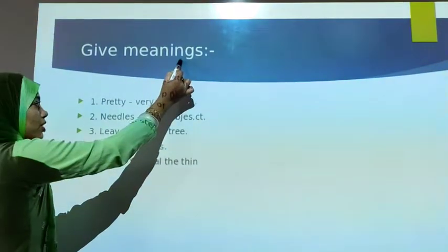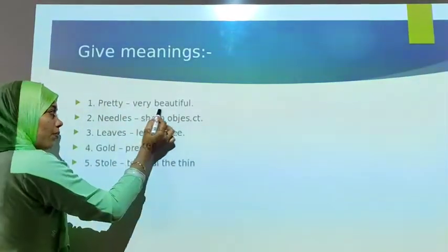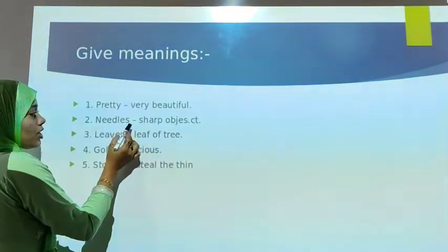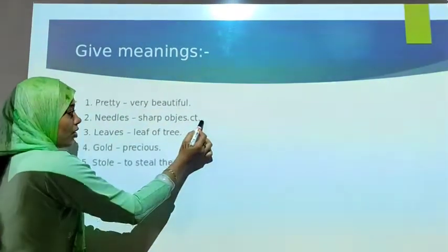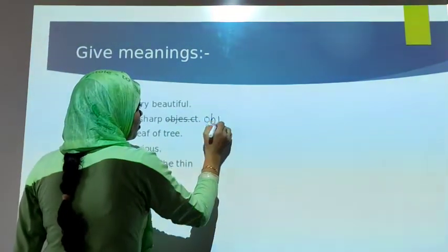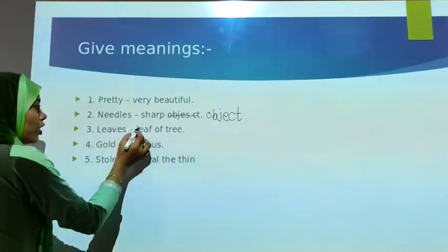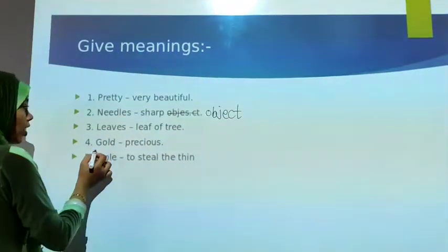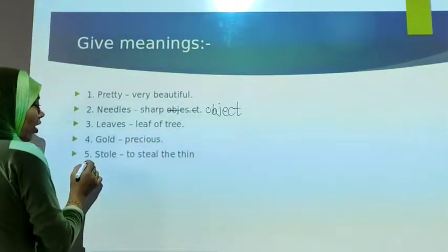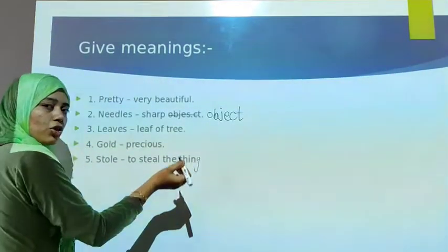Now let's see the Q meanings. Number 1: pretty — means very beautiful. Number 2: needles — means sharp objects. Number 3: leaves — means leaf of a tree. Number 4: gold — means precious metal. Number 5: storm — means strong wind in trees.